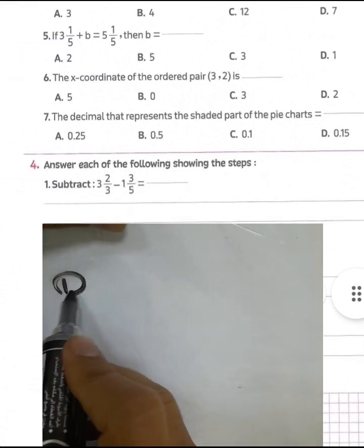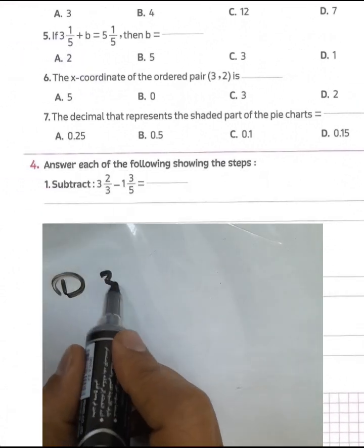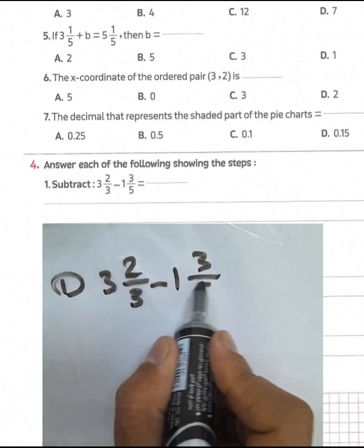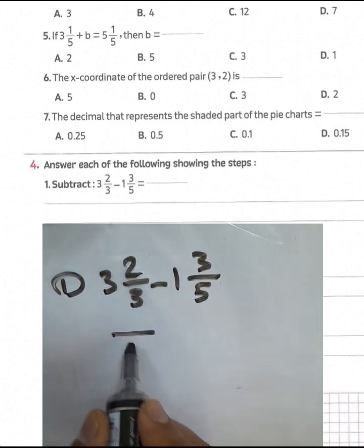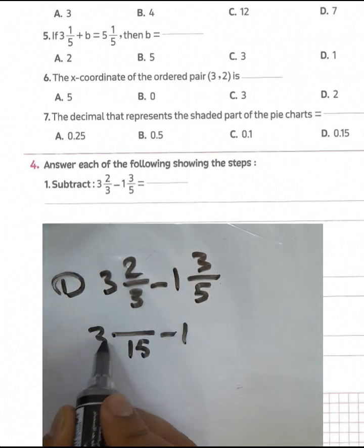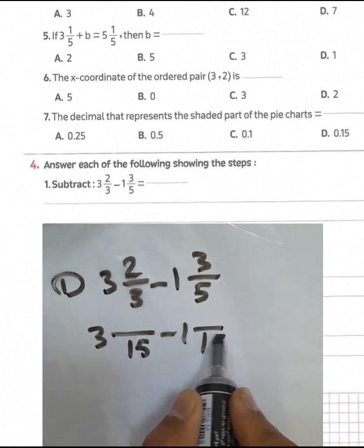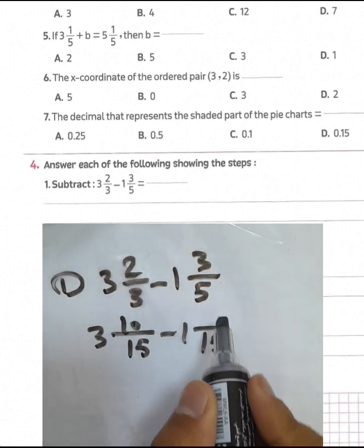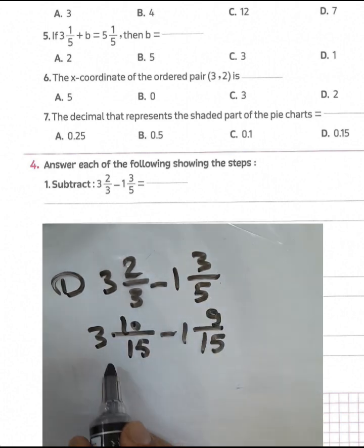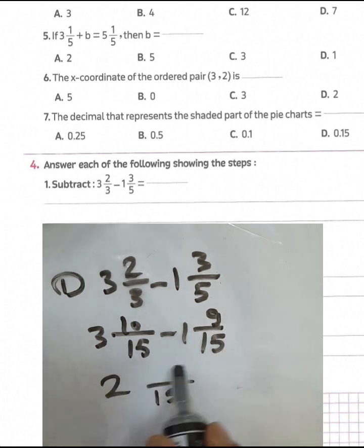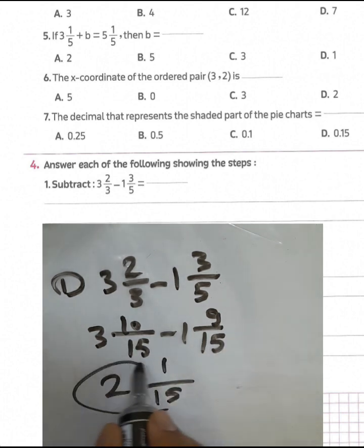Section 4, number 1: subtract 3 and 2 over 3 minus 1 and C over 5. We find the LCD between them — it will be 15. 5 times 2 equals 10, and 3 times 3 equals 9. 3 minus 1 equals 2 whole units, and 10 minus 9 equals 1. The result is 2 and 1 over 15.